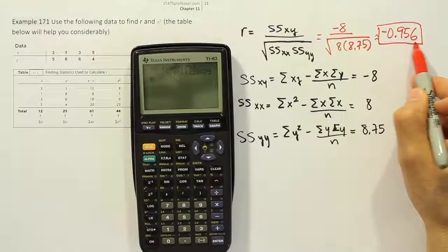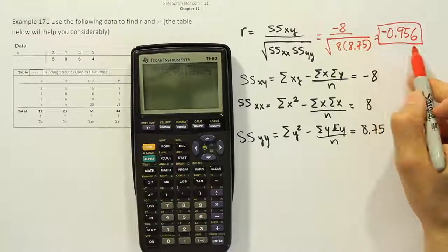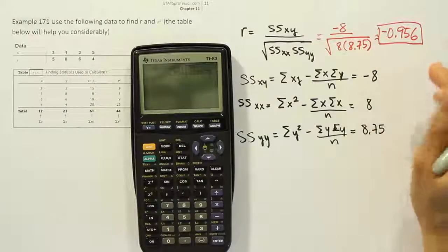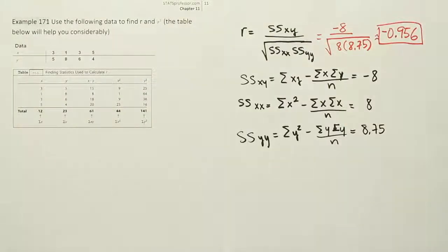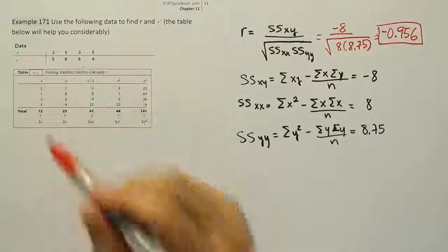And I would say that is a strong negative linear relationship. This is strong because it's 0.9 or over 0.9. And it's negative, of course, because of the negative sign. So we're going to say this is a strong negative linear relationship. And what does that mean? It means that as one variable increases, the other tends to decrease.